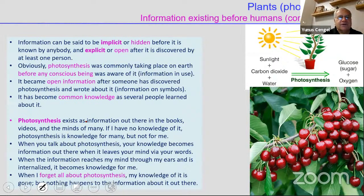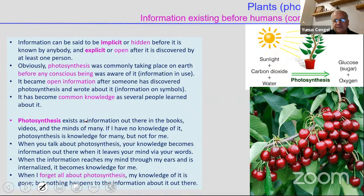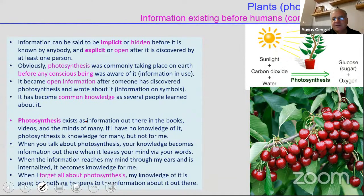Information exists in plants implicitly, but unless someone notices it, it doesn't become explicit. Photosynthesis was occurring before human beings became aware of it — probably only in the last few hundred years did we come to know it. So did we add knowledge? No — it is still the same photosynthesis. It was out there to be discovered: implicit until we knew it, then explicit.